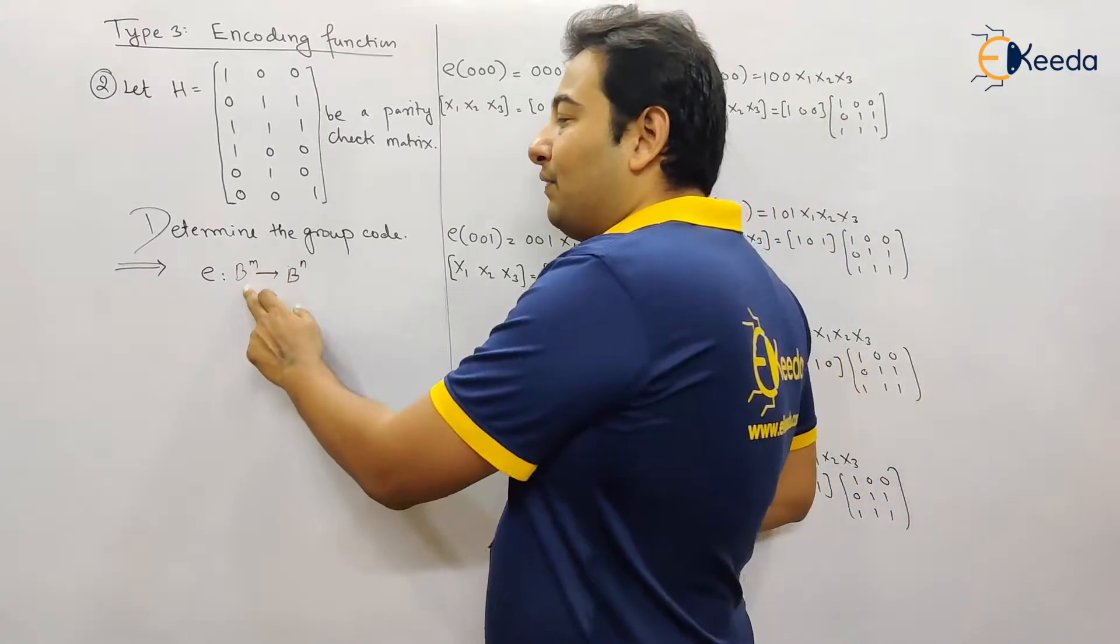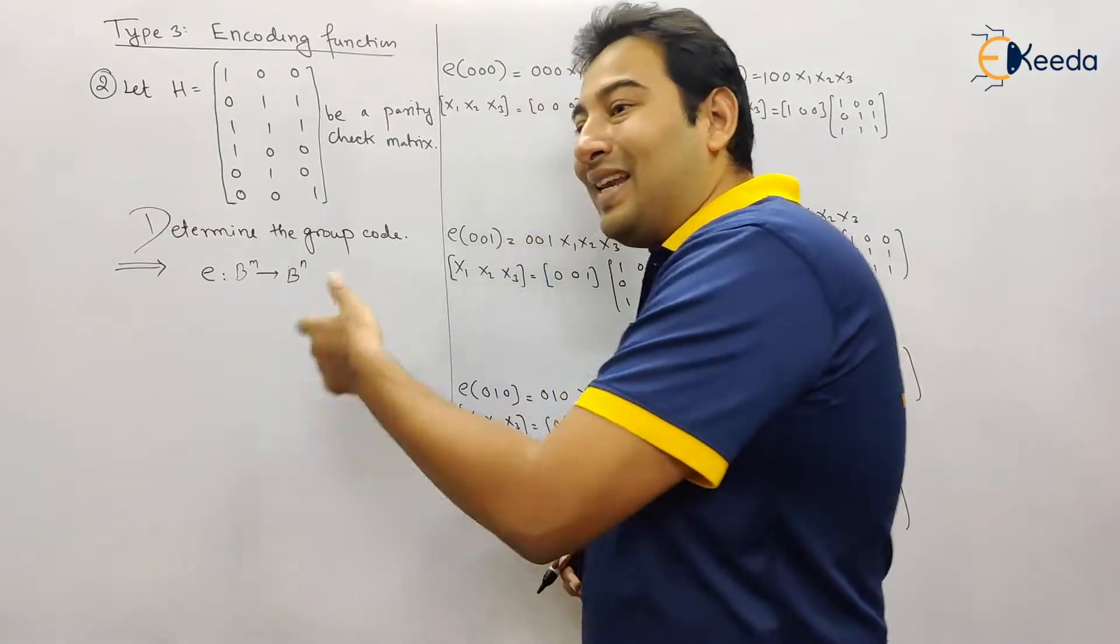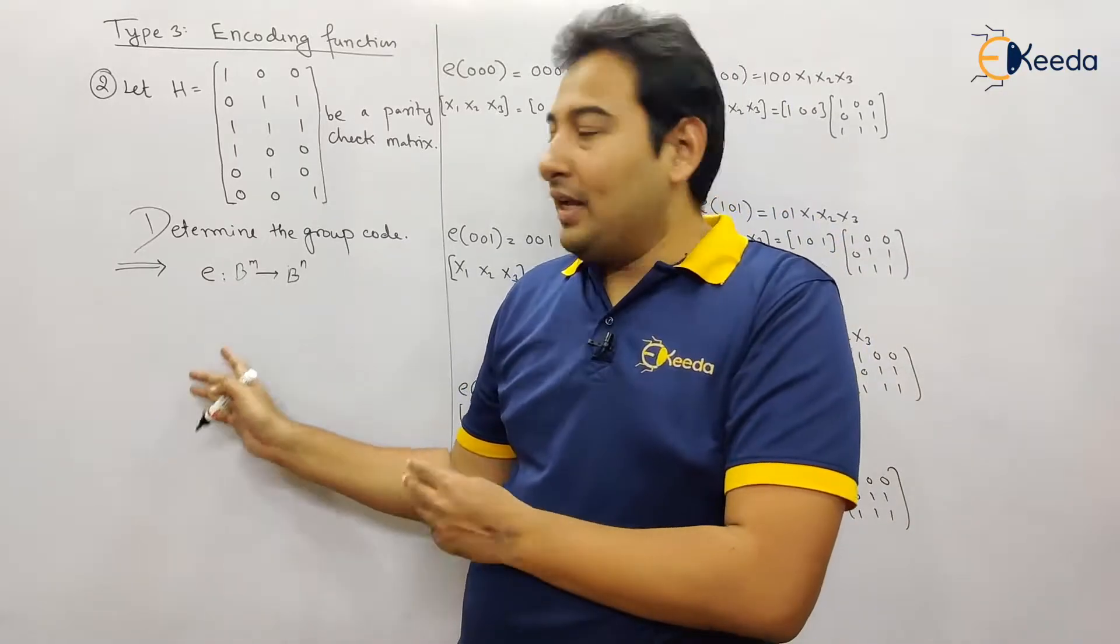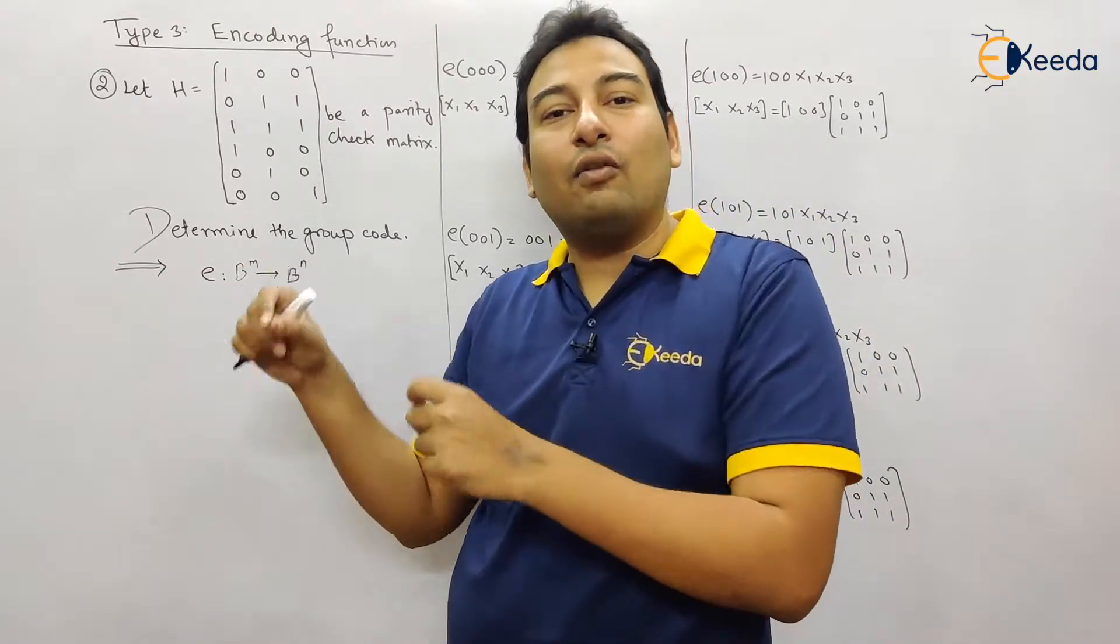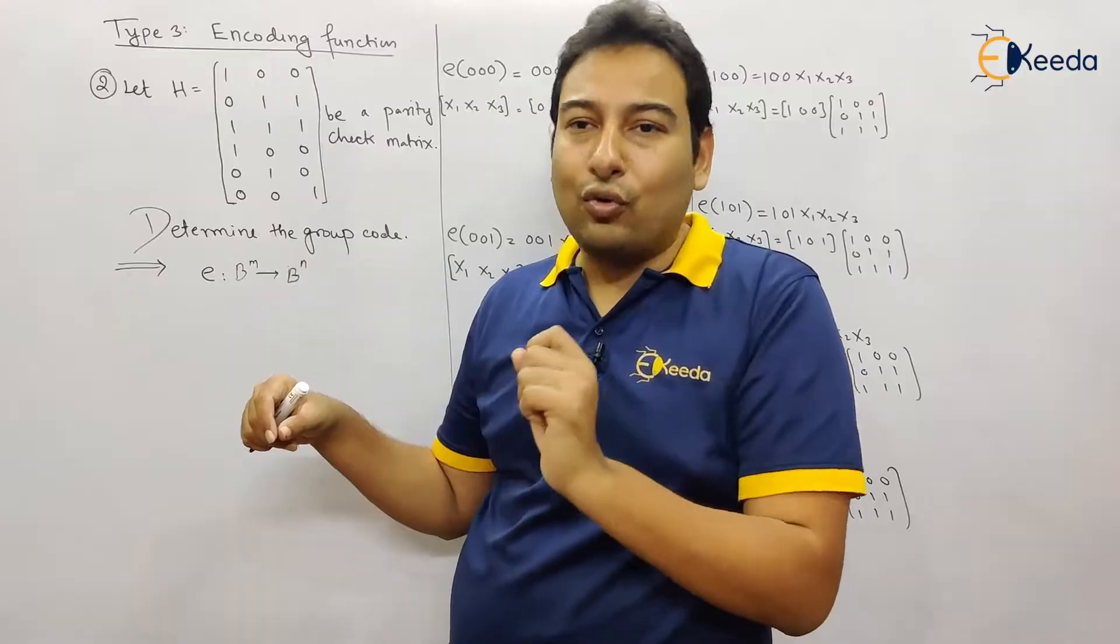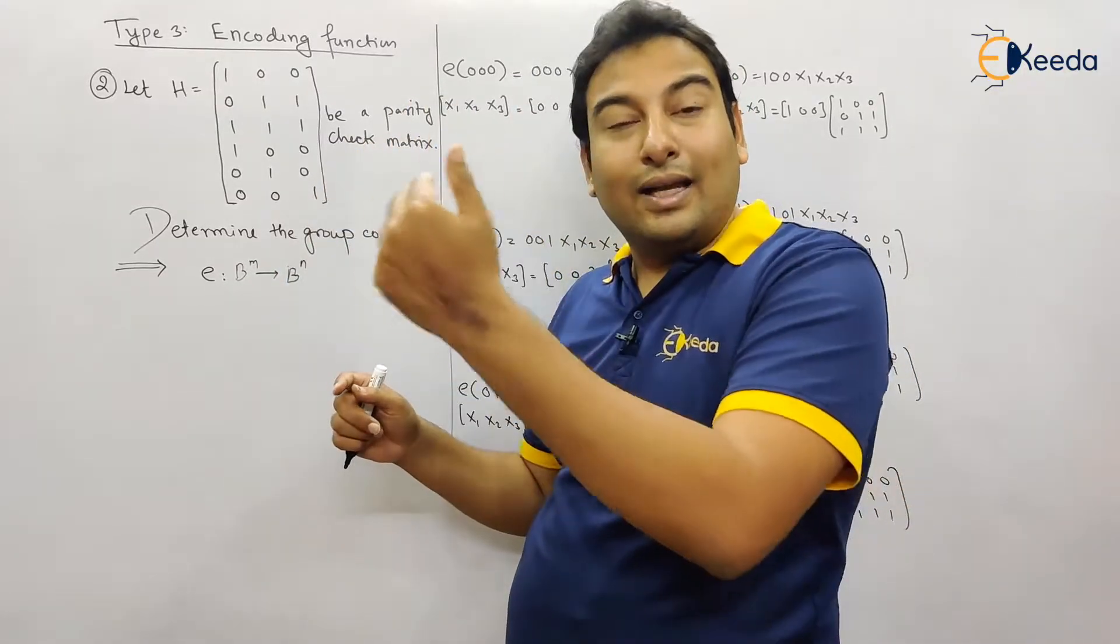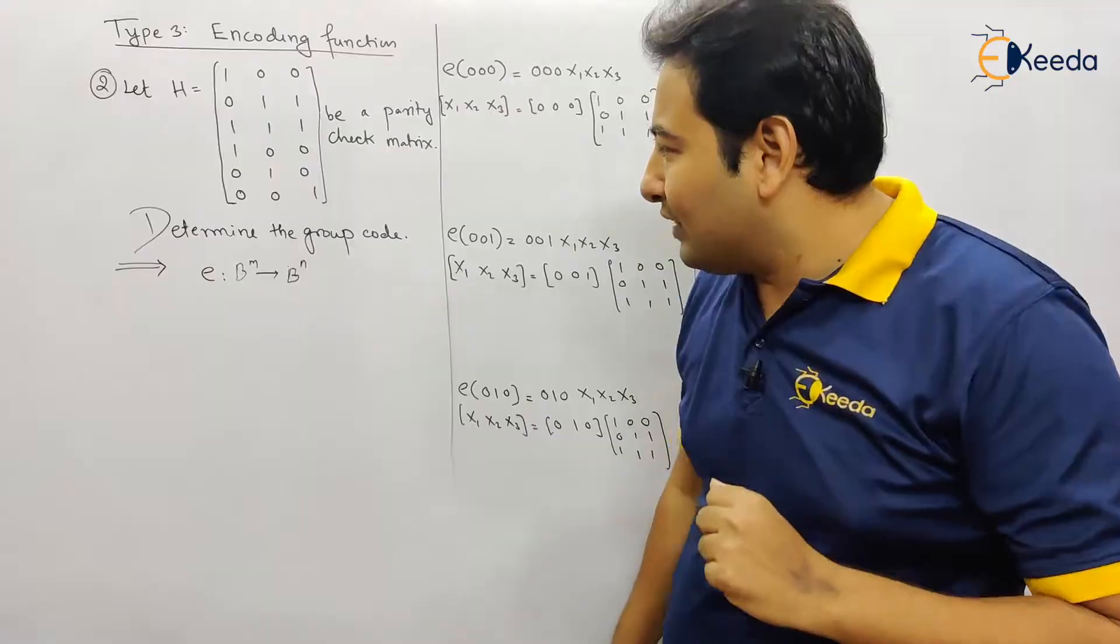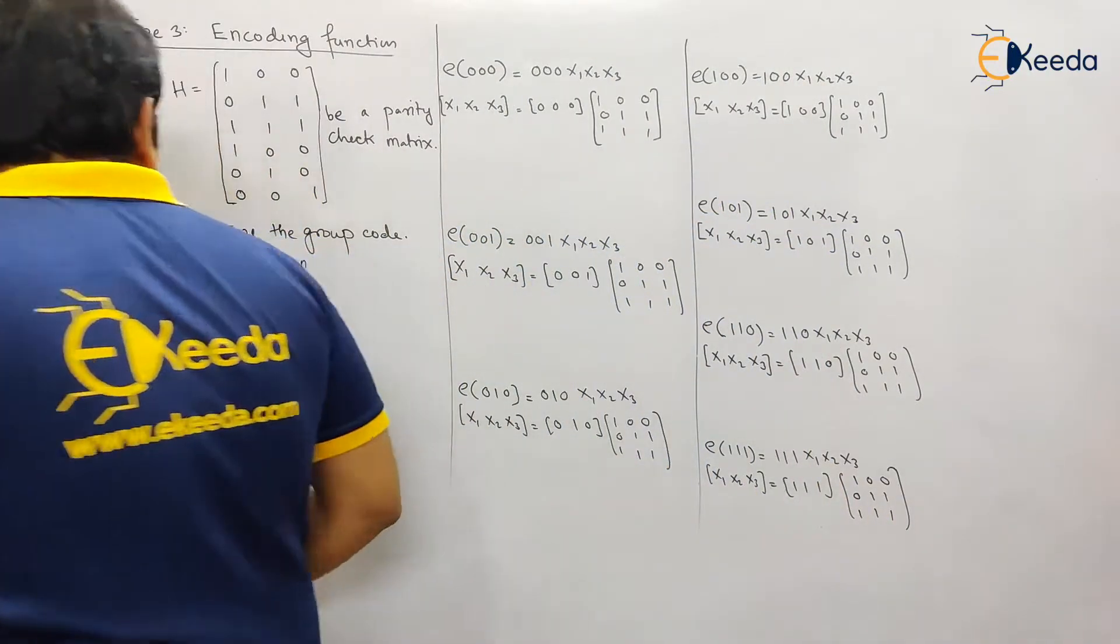Once we know what is m, then we'll get to know what will be the length on left hand side. If m is 2, on left hand side there will be four possibilities: 0 0, 0 1, 1 0, 1 1. If m is 3, then there will be 8 combinations going up from 0 to 7.